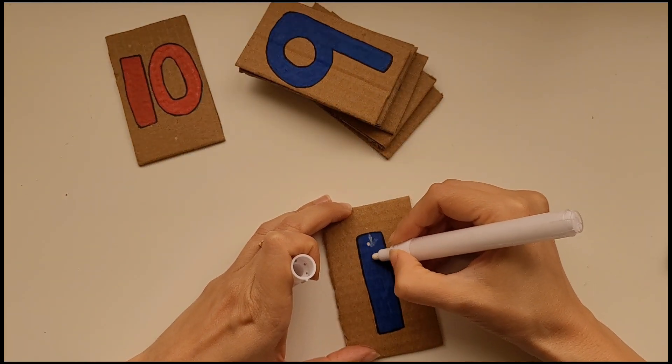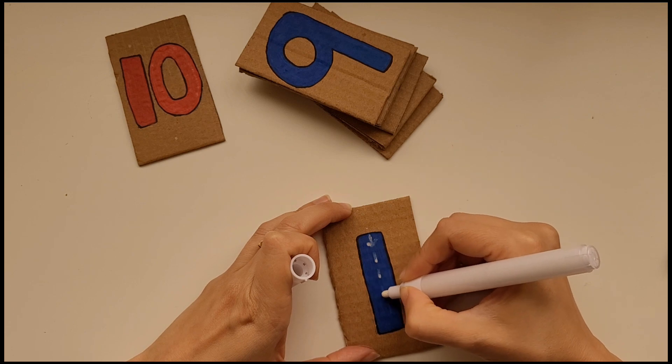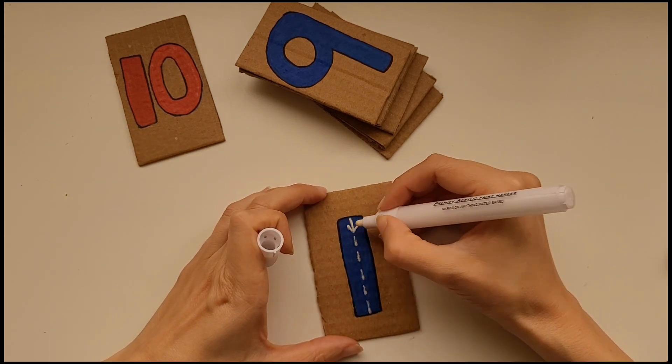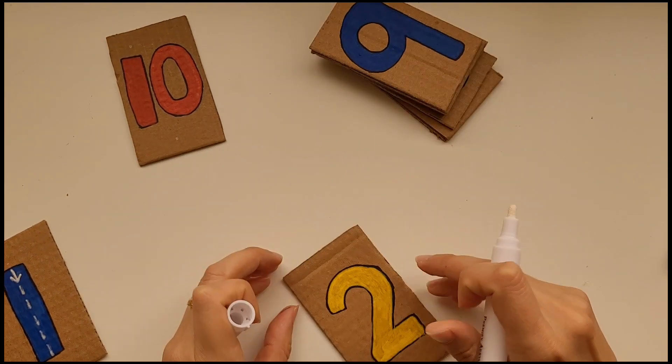Now that all the numbers are colored in, I'm going to use a white marker to make some tracing dots. This will make it easier for the child to trace the numbers.